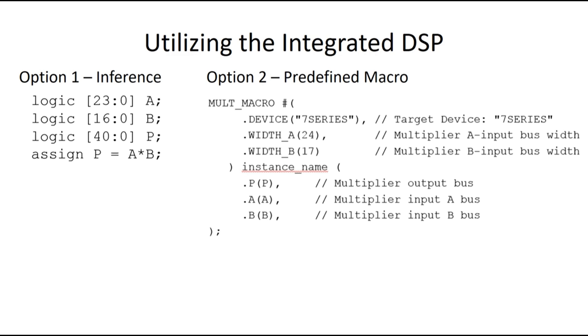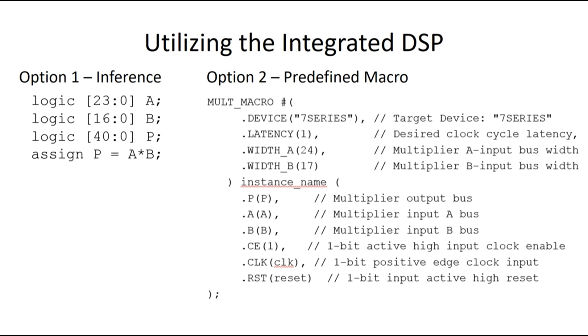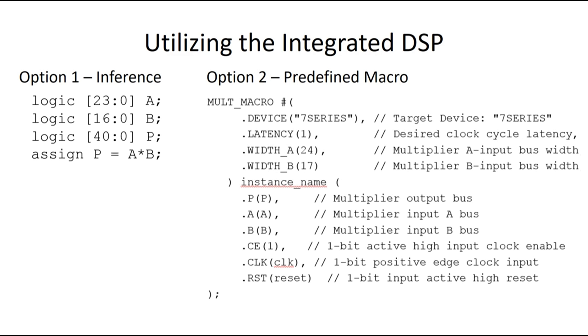There are also macros for other types of operations. You can actually expand this macro if you want to make use of the integrated register. So here we have the same multiplication macro where we've now specified that we're going to have a latency of one. And so because of this we need to have some additional inputs. We need to feed a clock input to feed the flip-flops and possibly a reset so we can get these flip-flops back to some known state at the beginning.